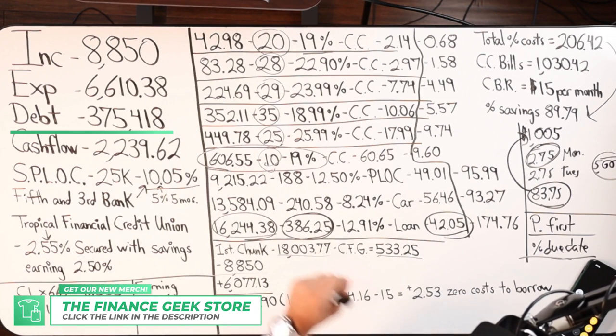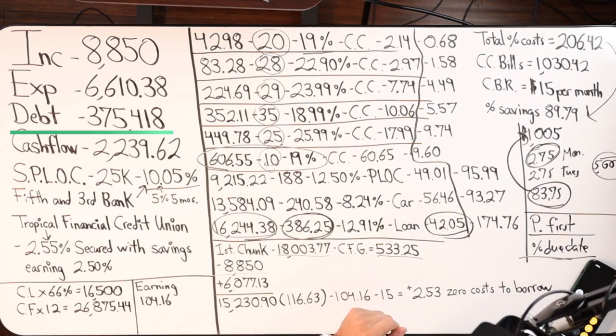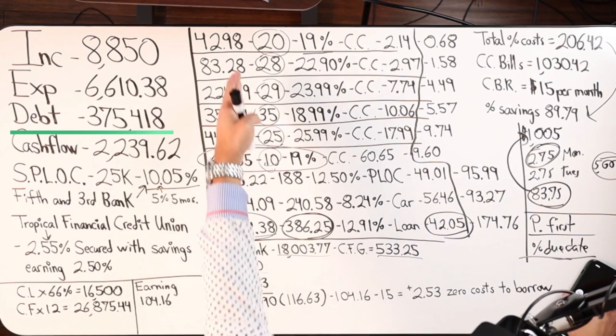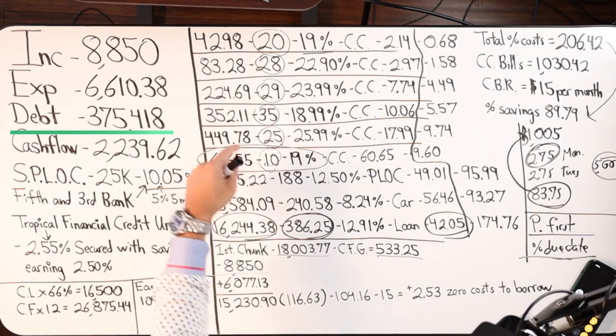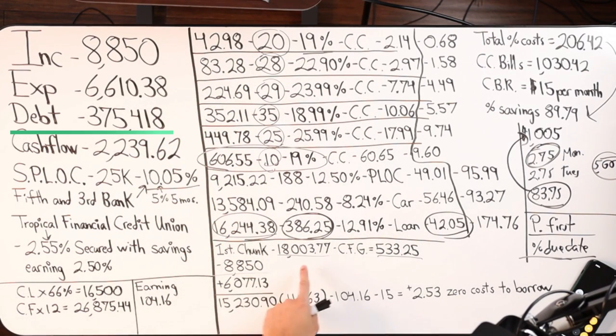How much debt do I owe? $375,418, right? How much debt is right here that we want to eliminate? These debts and this one. Did it not add up to $18,003.77?